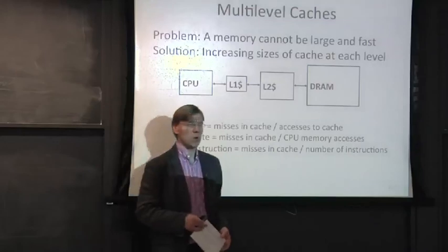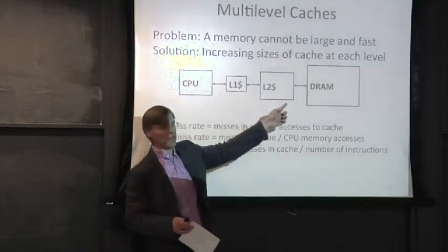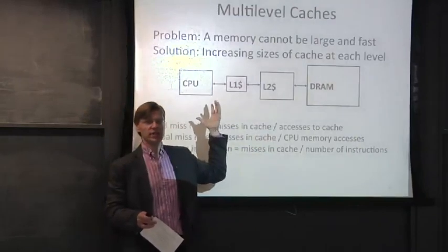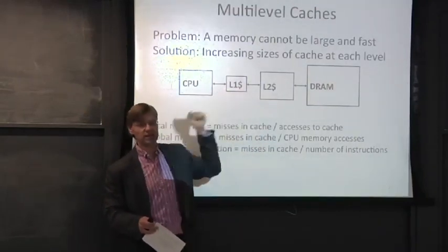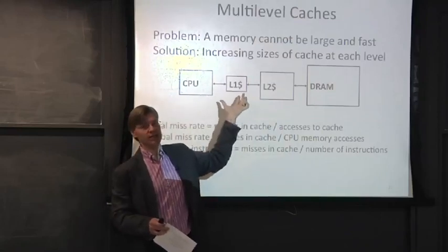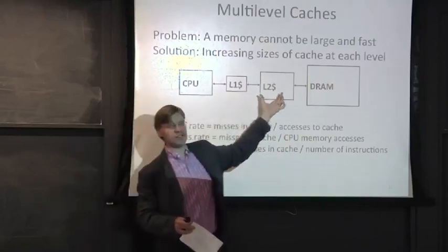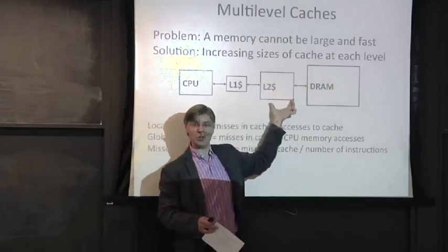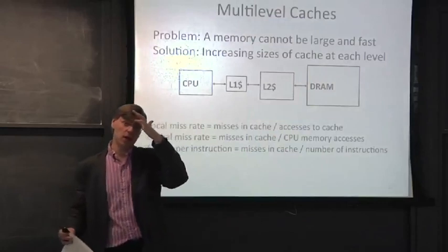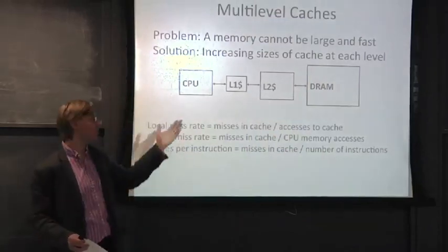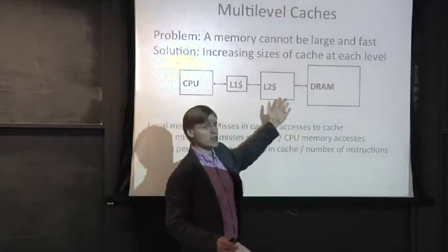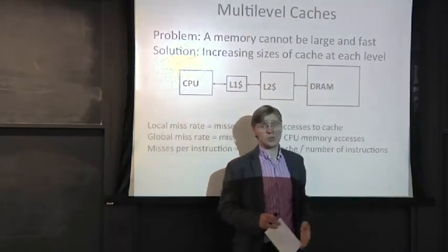The solution is to add multiple levels of cache. For a certain size working set, you store it in a small local cache that is both small and fast. Then you have a level two cache that is a little bit larger — with more capacity — but a little bit slower and farther away from the CPU. This can mitigate the cost of having to go all the way out to DRAM.